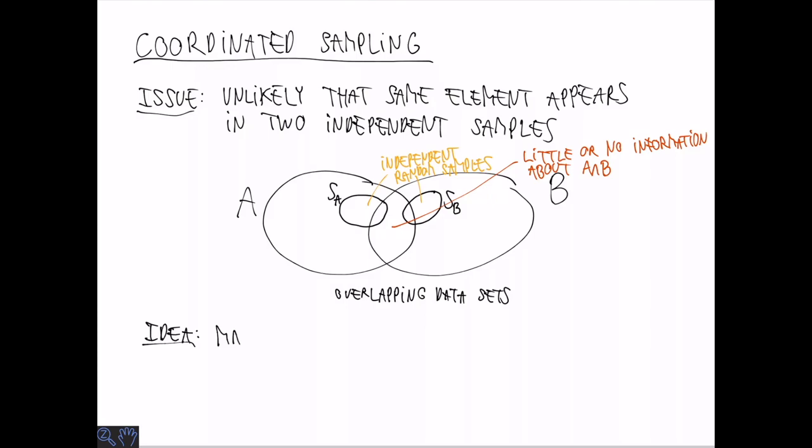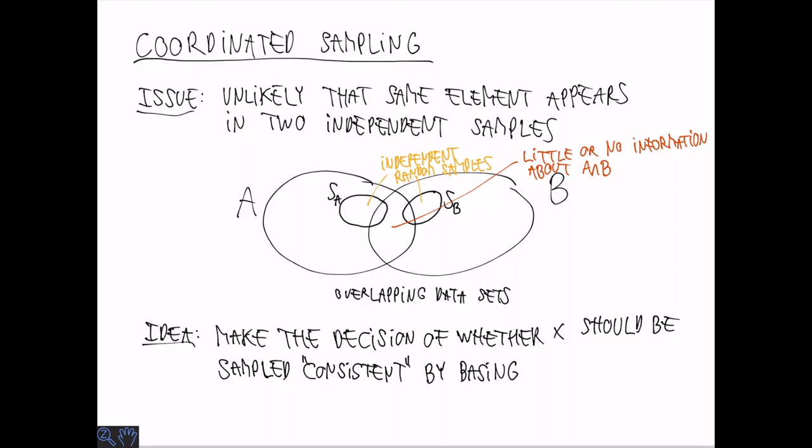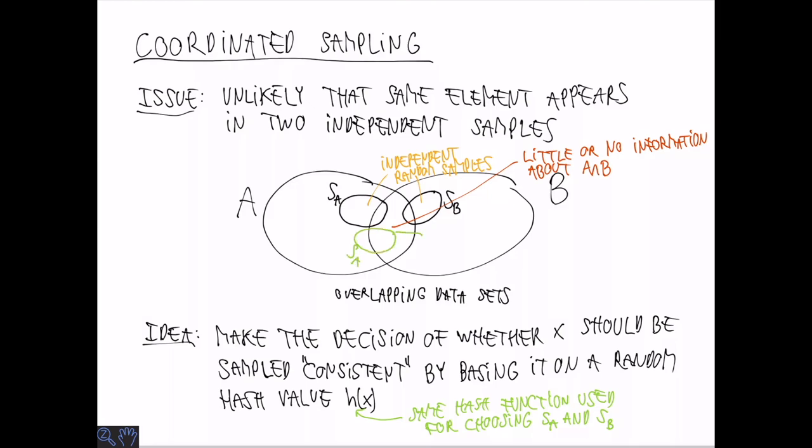The idea behind Coordinated Sampling is to make the decision of whether to sample an element or not dependent, or coordinated, not on an independent random choice, but on a random hash value h of x, that is the same for every sample that you take. Such samples are also known as consistent samples. Let's denote them by S'A and S'B.